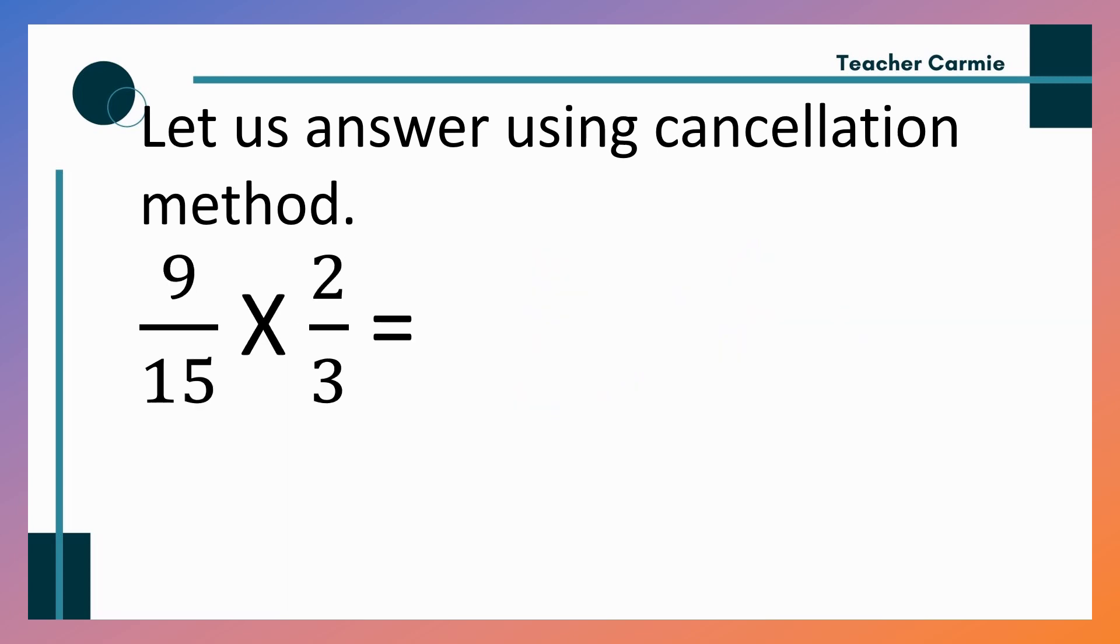Let's have another example. 9, 15 times 2 third. So, pwede ba, meron ba tayong pwede i-cancel? Yes po. Pwede niya i-cancel ng 9 at 3. Both divisible by? Yes, correct. 3. So, 3 divided by 3, 1. 9 divided by 3, 3. How about 2 and 15? Meron ba? So, wala na tayong pwede i-cancel. So, let us proceed. Numerator to numerator, 3 times 2, 6. 5, 15 times 1, 15. 6 over 15. Meron ba tayong pwede i-lowest term? Yes po. May GCF tayo na pwede i-divide na 3. So, let us divide. 6 divided by 3, 2. 15 divided by 3, 5. So, our answer is 2 fifth.